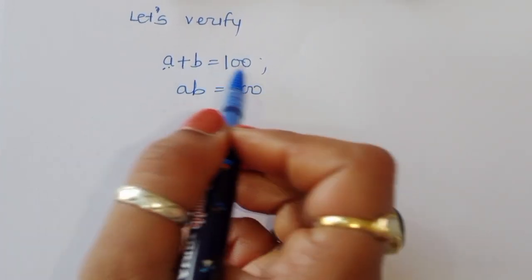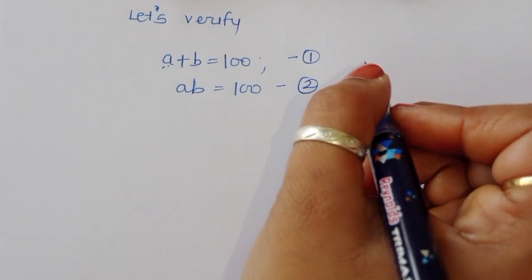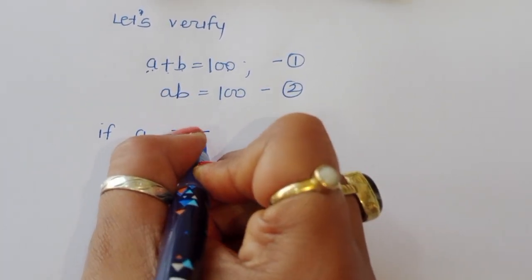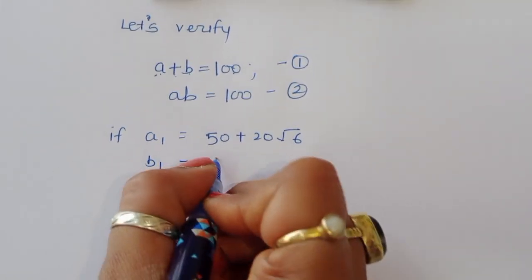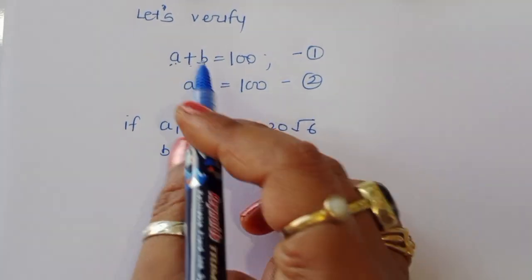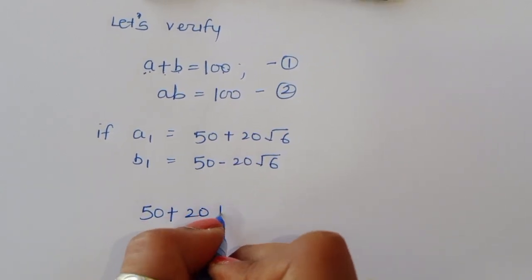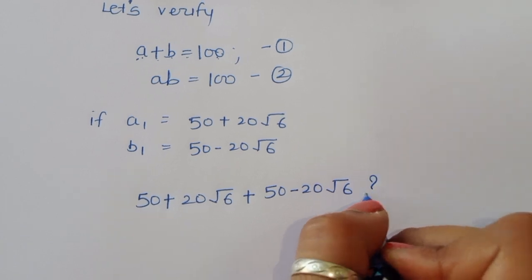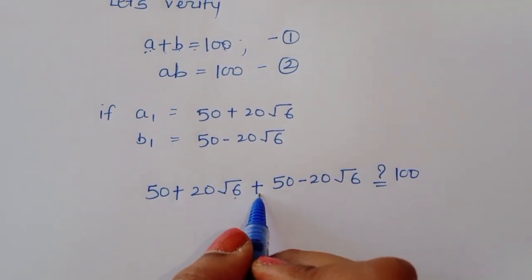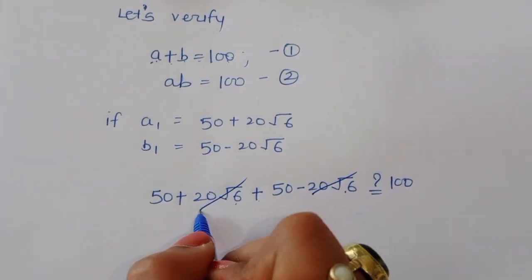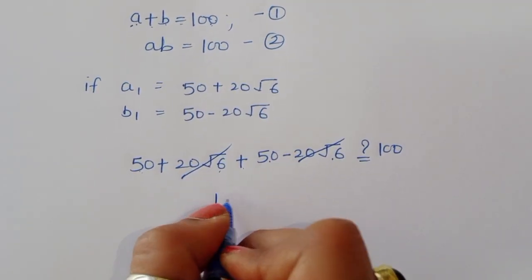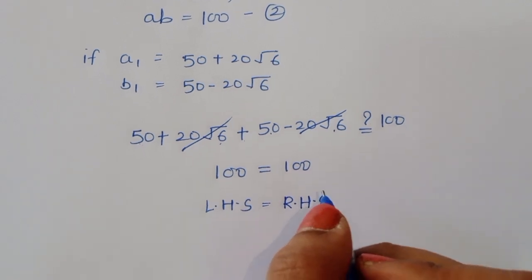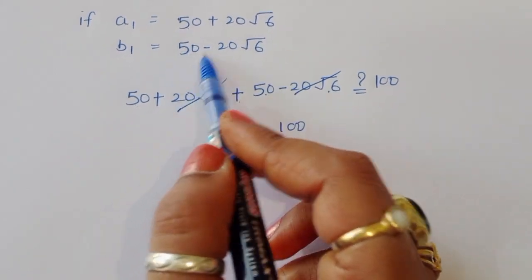For equation 1, a plus b equals 100. Taking a1 = 50 plus 20 root 6 and b1 = 50 minus 20 root 6: (50 plus 20 root 6) plus (50 minus 20 root 6) equals 50 plus 50, since the root 6 terms cancel. This equals 100, so LHS equals RHS. Equation 1 is verified.